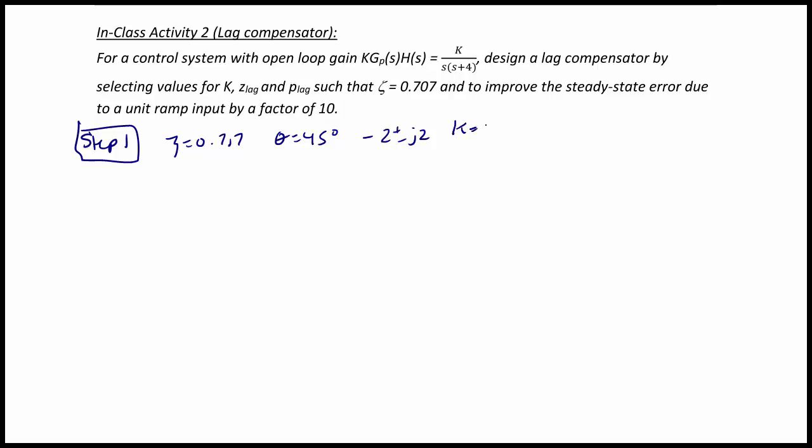And we determined that k equals 8 would give us that value. So k times gp of s times h of s is equal to 8 over s times s plus 4.